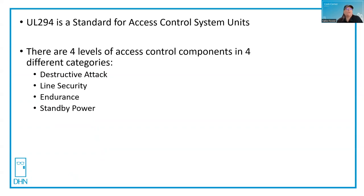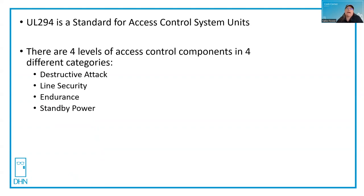There are four levels of access control components in four different categories. The standard covers destructive attack, line security, endurance, and standby power. This is a standard for access control system units.